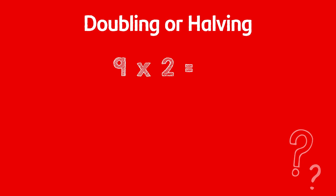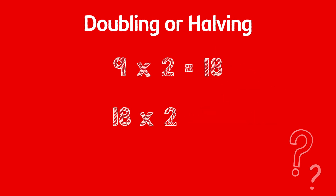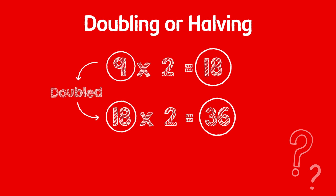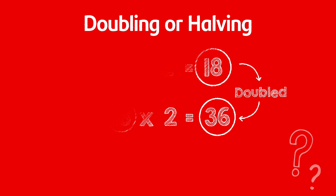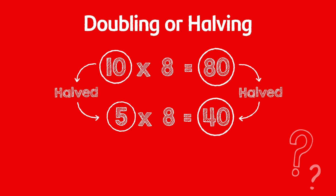I know that nine times two is 18, and if I use doubling, I also know that nine times four is 18 doubled — 36. If you double one of the numbers in the multiplication sentence, then the answer, the product of those numbers, will also double. You can also do this with halving: ten times eight is 80, so five times eight is 40. Explore it for yourselves and see if you can use this to help you with the times table fact that you find really tricky.